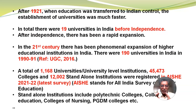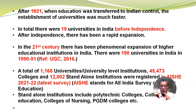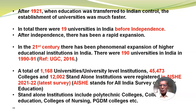After 1921, when education was transferred to Indian control, the establishment of universities was much faster. In total, there were 19 universities in India before independence. After independence, there has been a rapid expansion. In the 21st century, there has been phenomenal expansion of higher education institutions in India. There were 190 universities in India in the year 1991.